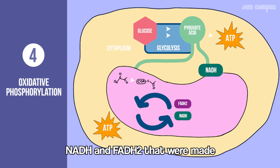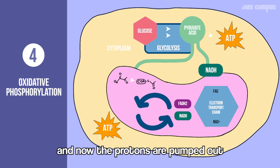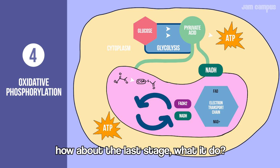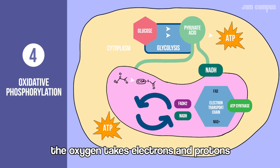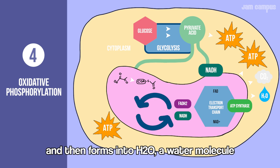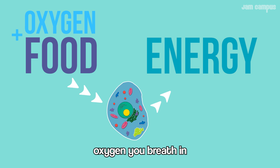NADH and FADH2 that were made put electrons into the electron transport chain, and are turned back into their empty forms — NAD+ and FAD. The protons are pumped out using energy, then flow back into the matrix through the enzyme ATP synthase. Oxygen takes the electrons and protons and forms water (H2O).